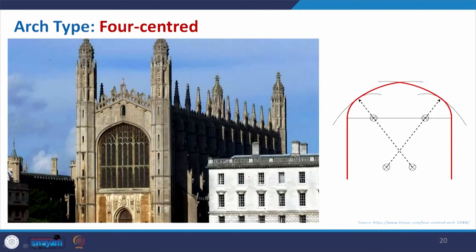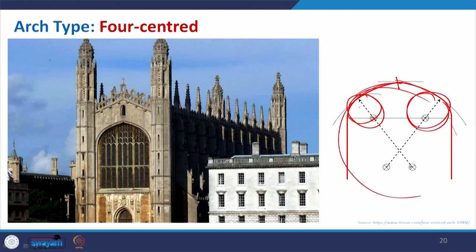The four-centered arch allows you to control the form further using pin joints. With two circles at two positions, and then controlling these to create bigger arcs, you can achieve a different geometry. If you increase the number of control points, you can create even more varied geometry. The four-centered arch is mostly used in churches and similar places.